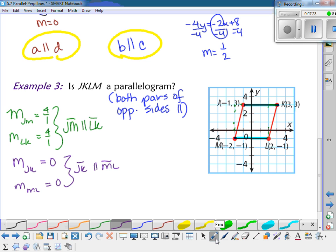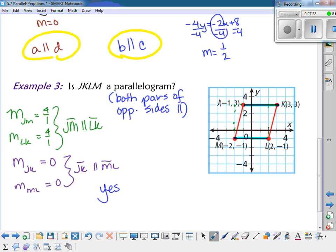And so, again, they have the same slope, so I can say that JK is parallel to ML. And so because both pairs of opposite sides are parallel, I can say, yes, it's a parallelogram.